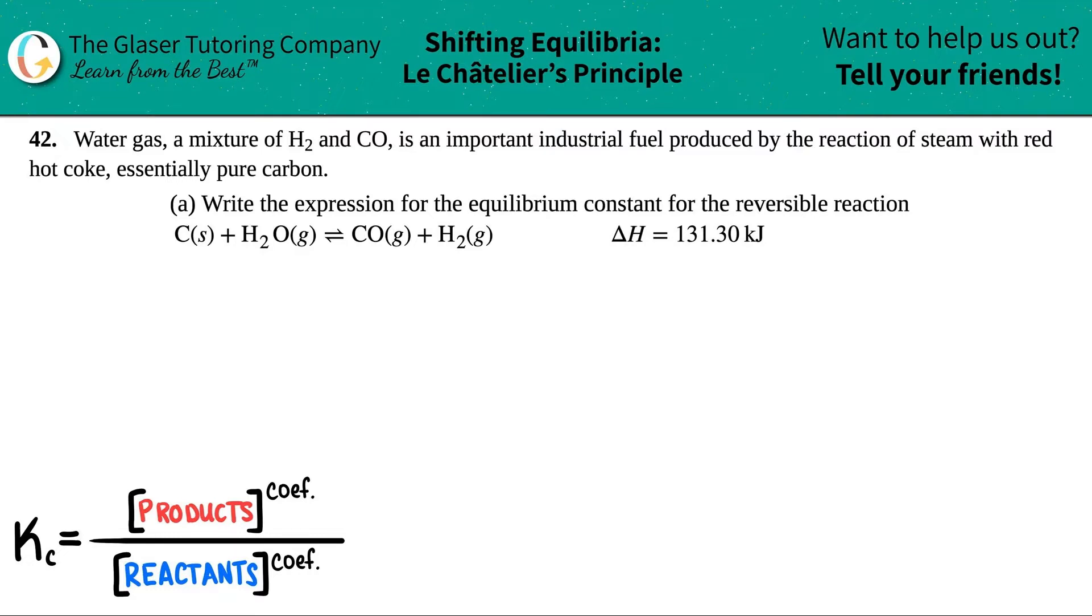And then we have letter A. Write the expression for the equilibrium constant for the reversible reaction, and then they give this as our reaction, right? So I'm just going to rewrite it. I'm just going to make sure that it's balanced because you never know. But I'm looking at this and it does look like it's balanced. So we're good to go.